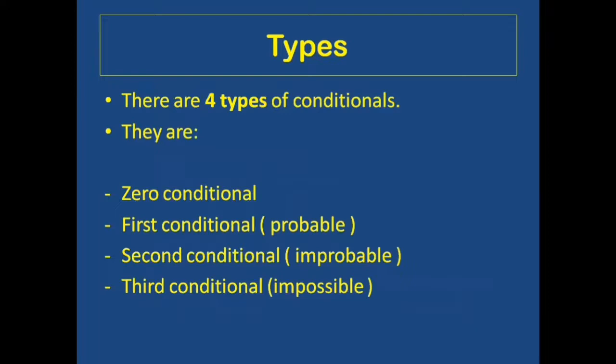We have to know how many types of conditionals there are. Actually, there are four types of conditionals. The conditionals are four: Number one, zero conditional; then the first conditional or probable conditional; second conditional or improbable conditional; and third conditional or impossible conditional.